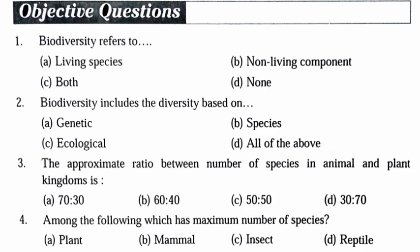Next question: What is the approximate ratio between the number of species in animal and plant kingdoms? The average ratio between the number of species in animal versus plant kingdoms shows there are more number of species in the animal kingdom.